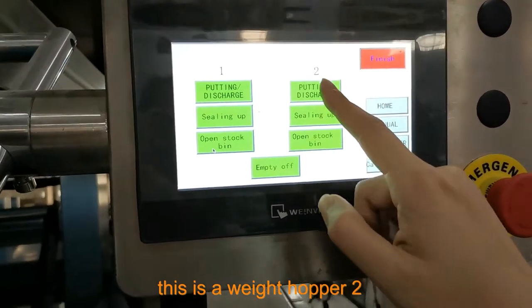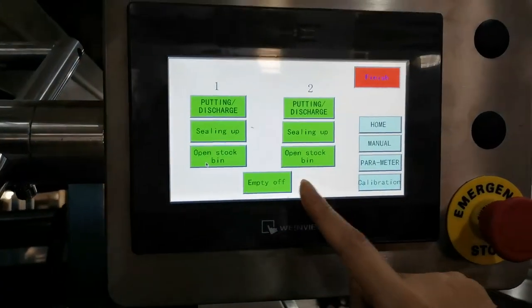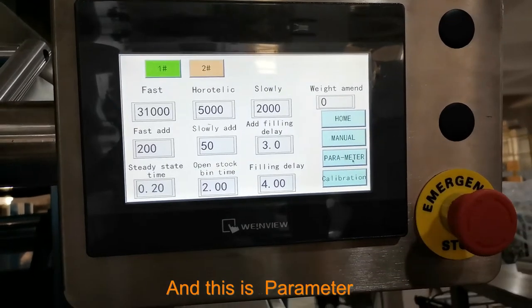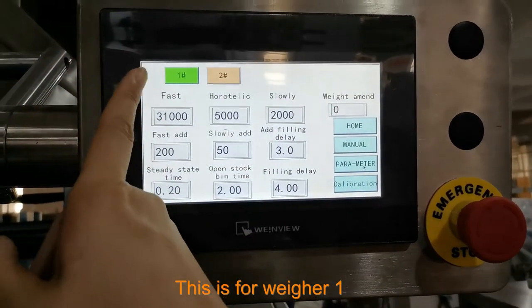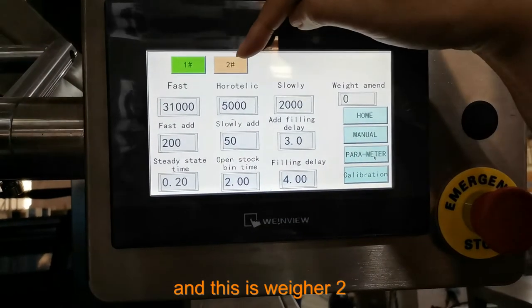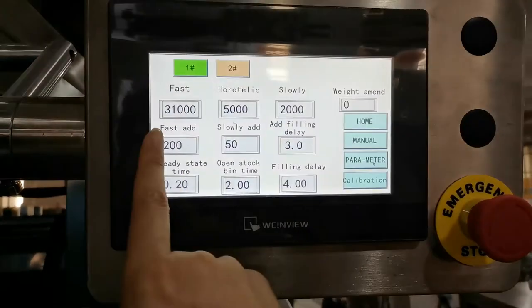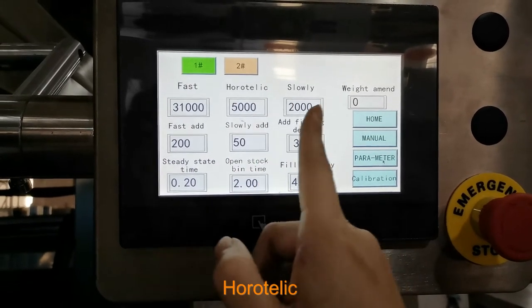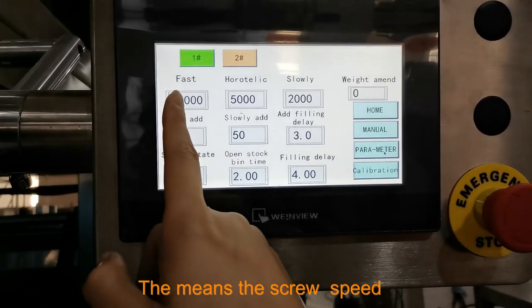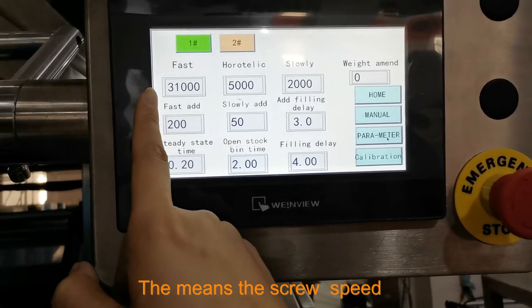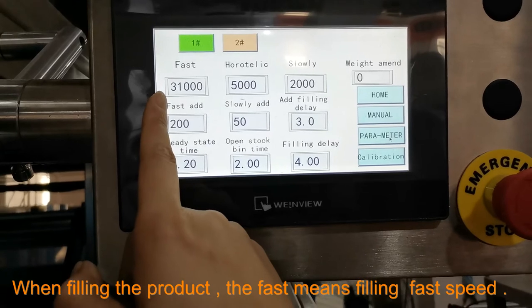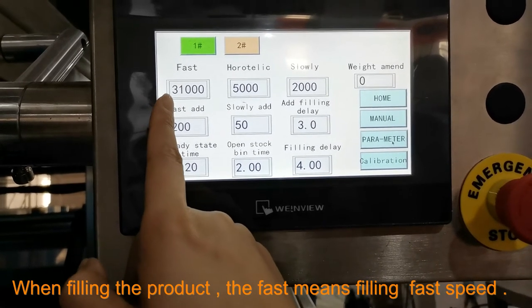This is weigher for part two test, and this is the parameter. This is for weigher one and this is for weigher two. Make it faster, power, technique, slow. This means the scale speed when filling the product - the filling fast speed, middle speed, and slow speed.